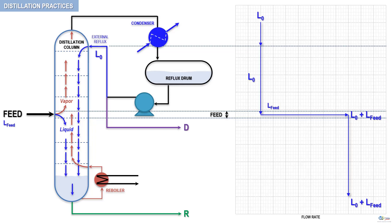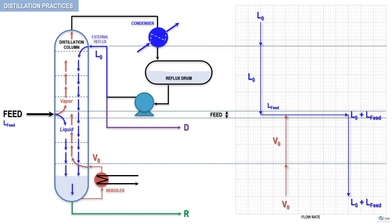Now let's shift our attention to the vapors rising up through the column. Starting from the bottom to the top of the distilling column, the vapor flow is initiated by the reboiler. The bottom liquid is circulated through the reboiler, vaporizes, and then is reintroduced further up the column for another pass at distillation. We'll call this upward vapor flow V0 and represent it on the graph. The vapors flow from bottom to top until they reach the feed stage at almost a constant flow rate equal to V0, as depicted here. We assume that the scrubbing process has little impact on the vapor flow.